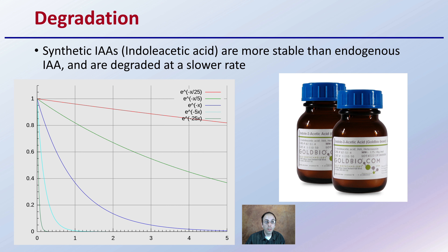Regarding degradation, synthetic IAAs — indole acetic acid — are more stable than those applied endogenously, which are the ones produced in the plant, and are degraded at a slower rate. When considering plant hormones, we want to consider that they are going to be broken down. Will it be a rapid, exponential decay, or a slower, more linear form? That could be dependent on the exact hormone, the conditions, and many environmental factors.